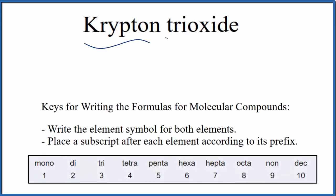To write the formula for krypton trioxide, we first need to determine what type of compound we have.